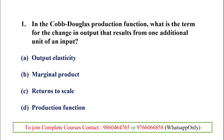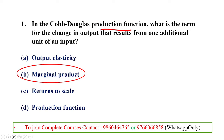Question 1: In the Cobb-Douglas production function, the term that indicates change in output resulting from an additional unit of an input — an additional unit change in input that results in a change in output — is called marginal product. So marginal product is the correct answer, as it gives the additional change in output from an increase in input.